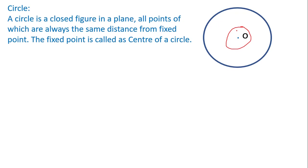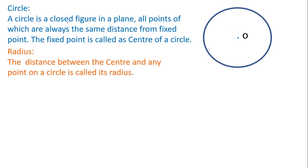Such a closed figure is called a circle. The fixed point inside the circle is called the center of a circle. Next: radius. The distance between the center and any point on a circle is called its radius. The line segment which joins the center and any point on the circle is called the radius.